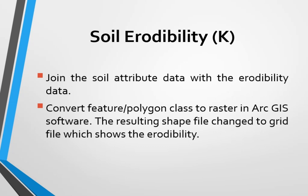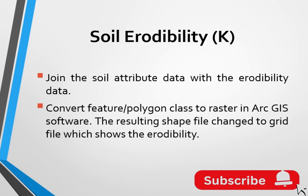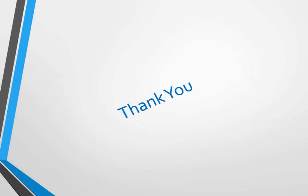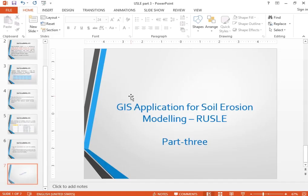After joining the soil attribute data with the erodibility data, we convert the feature polygon class to raster in ArcGIS software. The resulting shapefile is changed to a grid file, and that grid shows us the erodibility of the watershed or the intended area. In this way we can proceed with the determination of the soil erodibility K factor.